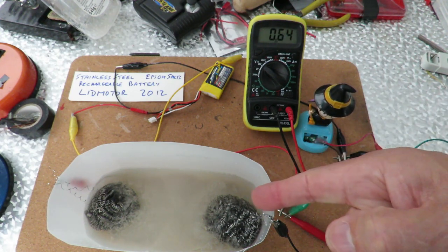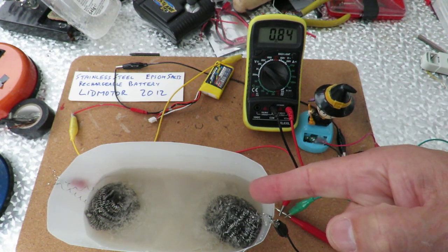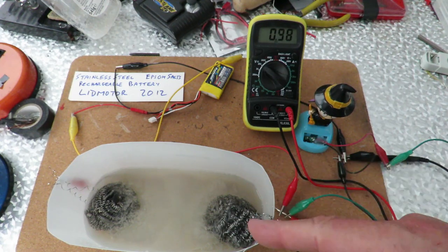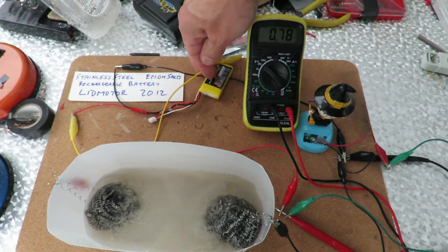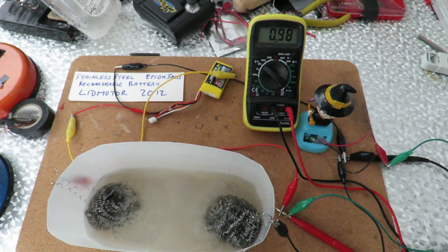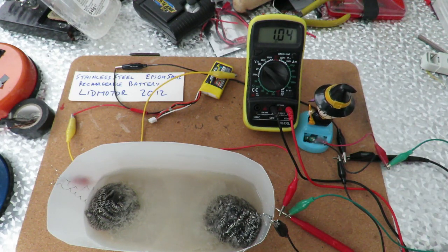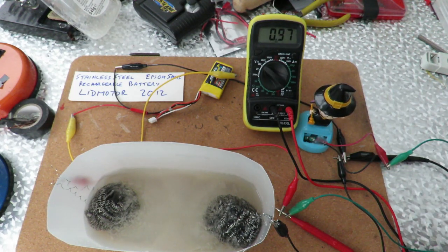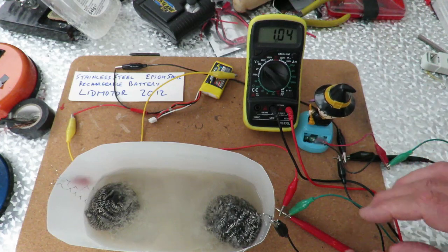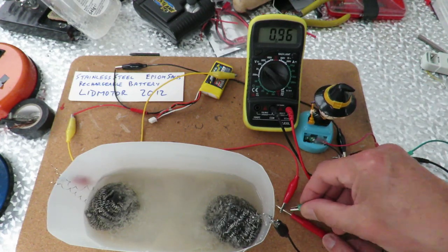So we have created a rechargeable battery because we've charged it and we're now discharging it through the solar wobbler.